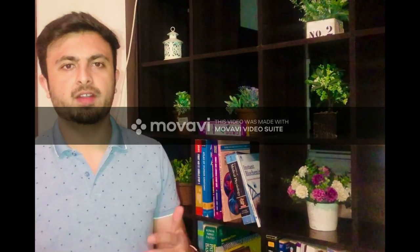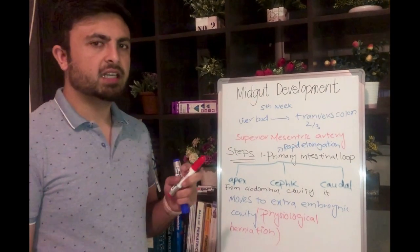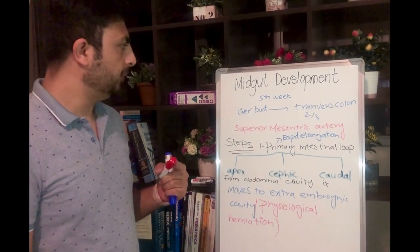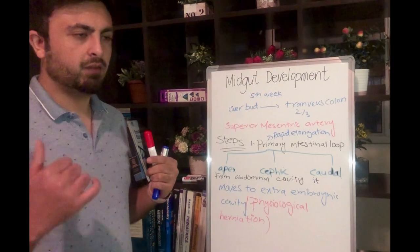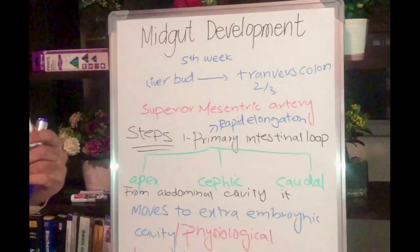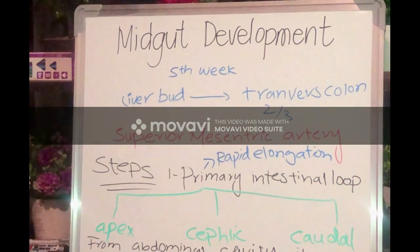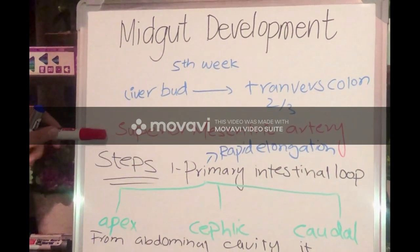Hello guys, we will continue our video lecture series on the development of the digestive system. Today we will discuss the development of the midgut. The midgut starts developing from the fifth week in the embryo. It starts from the end part of the foregut, which is the liver part, and it ends in the two-thirds of the transverse colon. The blood supply to the midgut is through the superior mesenteric artery.